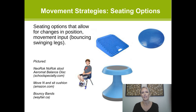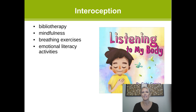The last sense we'll discuss is interoception — how we experience sensations inside our body, including heart rate, breathing, body temperature, whether we feel full or hungry, and whether we need to use the washroom. Interoception also helps us understand the connection between our emotions and our body sensations — for example, how heart rate speeds up when we're scared or upset. Great books like Listening to My Body by Gabby Garcia can help explain these concepts for kids, and mindfulness and breathing exercises can help us tune into body sensations. Resources are available through Autism Ontario and the AID Canada website.